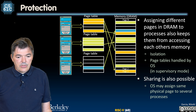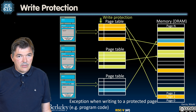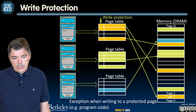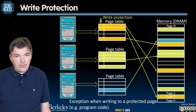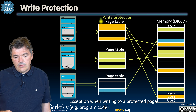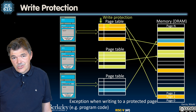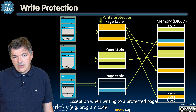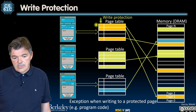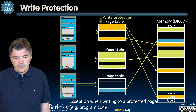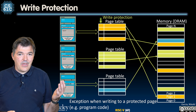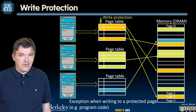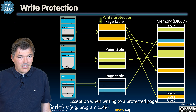To prevent writes to certain pages, there is a write-protection bit in the page table entry. Page tables, in addition to physical addresses, have flags — single bits indicating the status of a page. Pages that are write-protected have their bit set to one. If a process tries to write to a write-protected page, that draws an exception and the OS handles it.